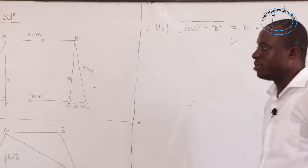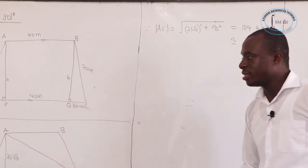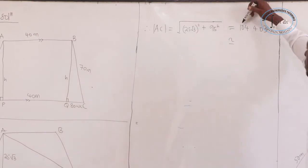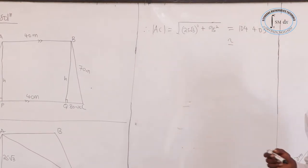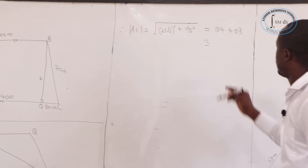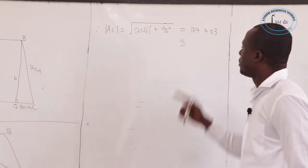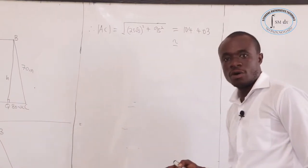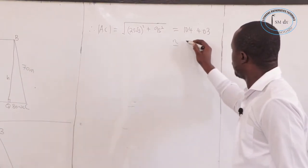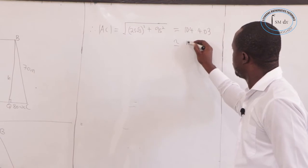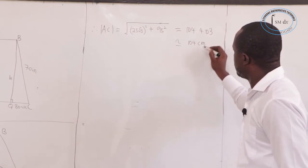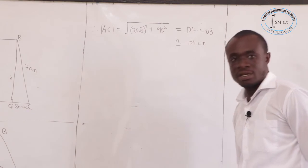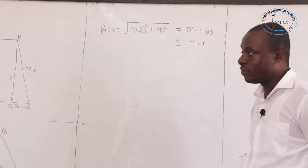The question asks for three significant figures. The first significant figure is 1, the second is 0, and the third is 4. Since the following digit is 4, which is less than 5, the answer is 104 meters to three significant figures.